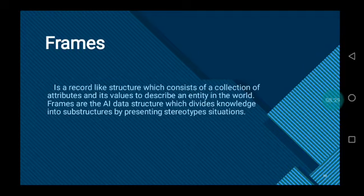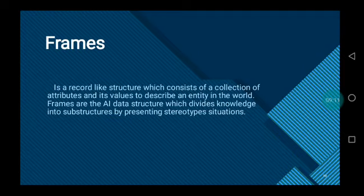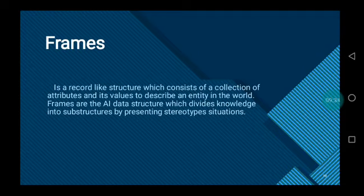Frames. A frame is a record-like structure which contains a collection of attributes and their values to describe an entity in the world. Frames are data structures which divide knowledge into substructures by presenting stereotypical situations. A frame is also a type of schema used in many AI applications including vision and natural language processing. Frames are similar to a record structure where fields and values correspond to slots and slot fillers. Basically, it is a group of slots and fillers that defines a stereotypical object.